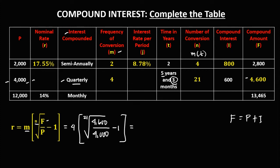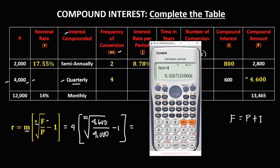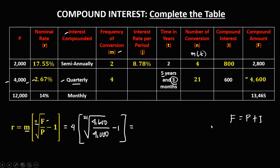To solve for the nominal rate using the calculator: take the 21st root, open parenthesis, 4,600 divided by 4,000, close parenthesis, equals, then minus 1, equals, then times 4, equals. To convert to percent, multiply by 100. Therefore the nominal rate is 2.67%.